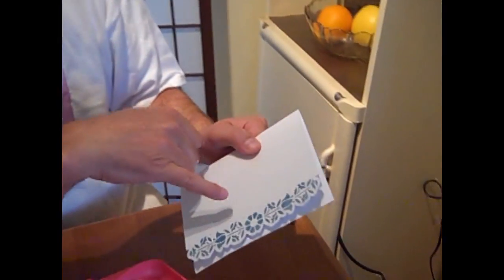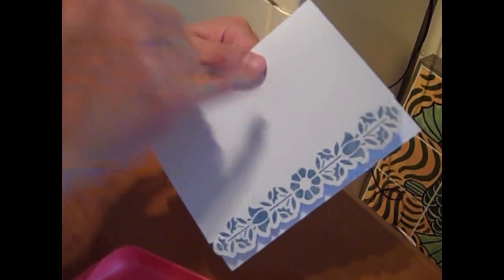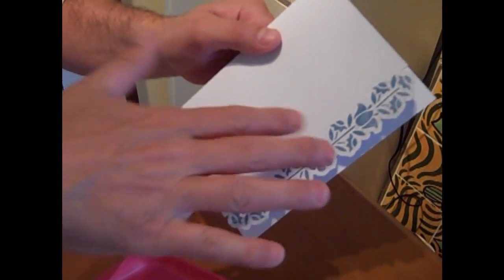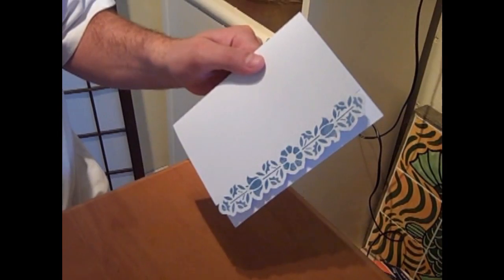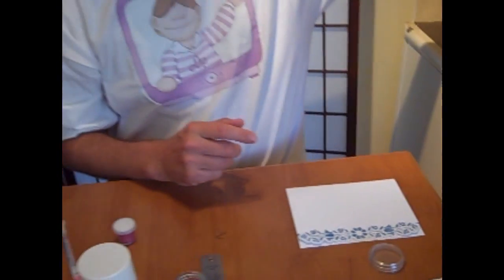You may have speckles around where it's on the actual card. Some people use chalk or anti-static pads to brush it off, but I'm just going to leave it there because I've got a lazy way of solving that. So now you take your heat gun.